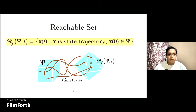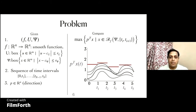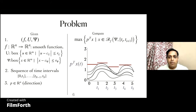The set of reachable states of a nonlinear system at a time t is the set of states xt where x is a state trajectory of the system such that the initial state x0 belongs to psi. We consider the problem of computing bounds on the projection of the reachable set at any given time t. Given a vector field f, a set of possible inputs u, a set of initial states psi, and a sequence of time intervals, for a given direction vector p, we want to compute the maximum of p transpose xt where x is a trajectory such that x0 belongs to psi.